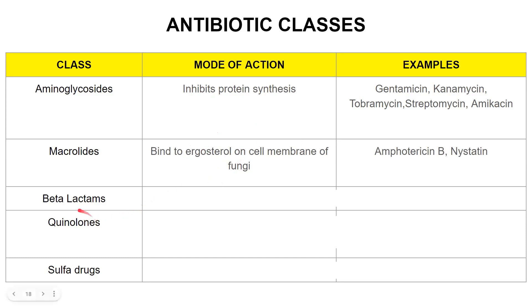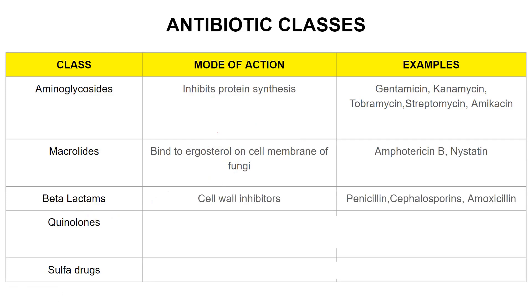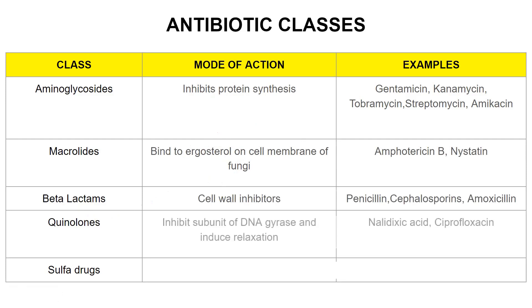Next we have beta-lactams, a very common class of antibiotics. These are antibacterials that act on the cell walls of bacteria. Examples include penicillin, cephalosporins, and amoxicillin. Next we have quinolones, which are inhibitors of the subunit of DNA gyrase and induce relaxation. Examples are nalidixic acid and ciprofloxacin.